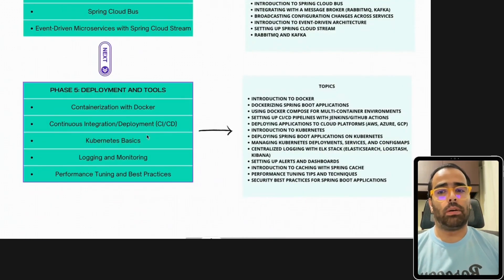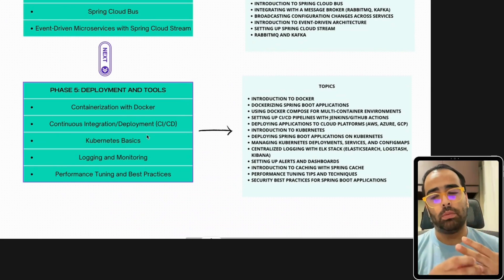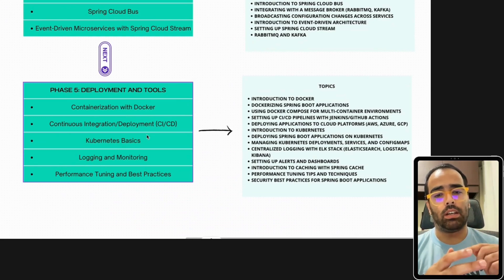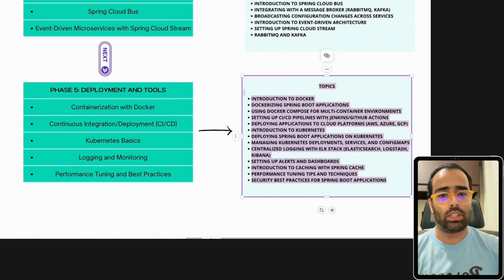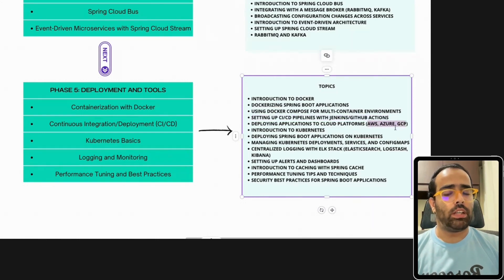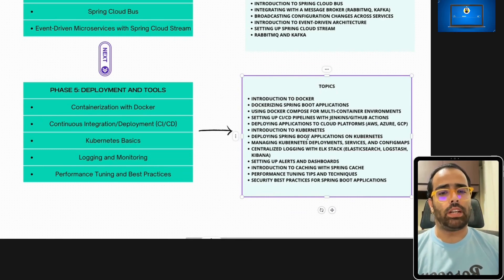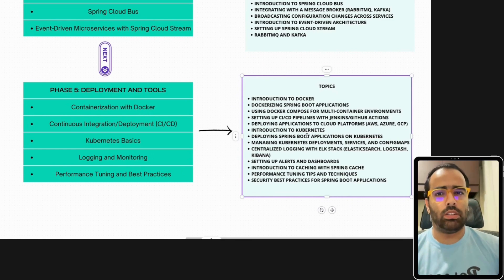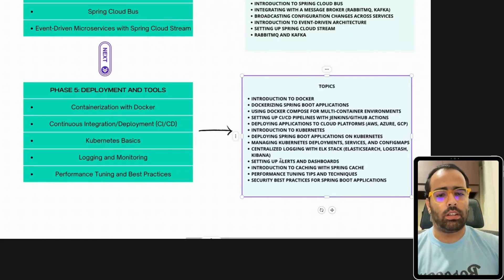The final phase is deployment and tools. You should know Docker, CI/CD, Kubernetes, logging, and the ELK stack — Elasticsearch, Kibana, and Logstash. You should set up a CI/CD pipeline with Jenkins or GitHub Actions. For cloud platforms, you can explore any provider with a trial — GCP is recommended here. You can deploy Docker locally on your laptop to understand how it works, including Helm files and related configuration.